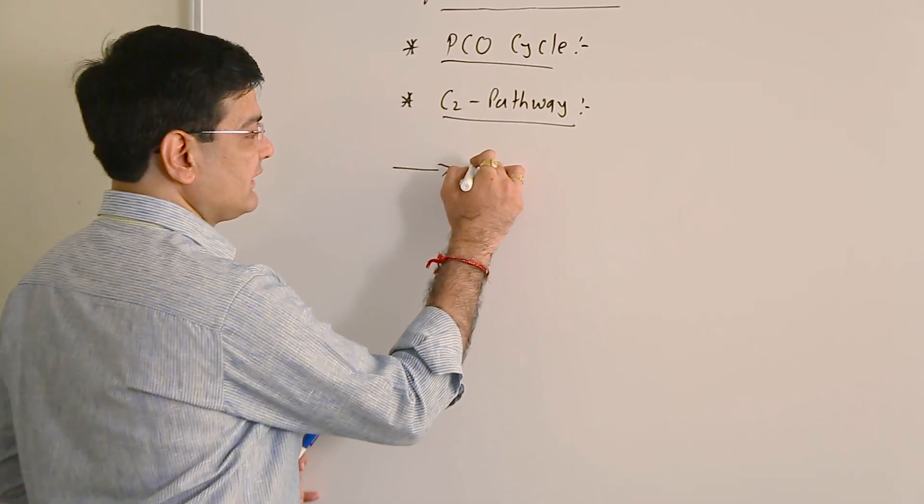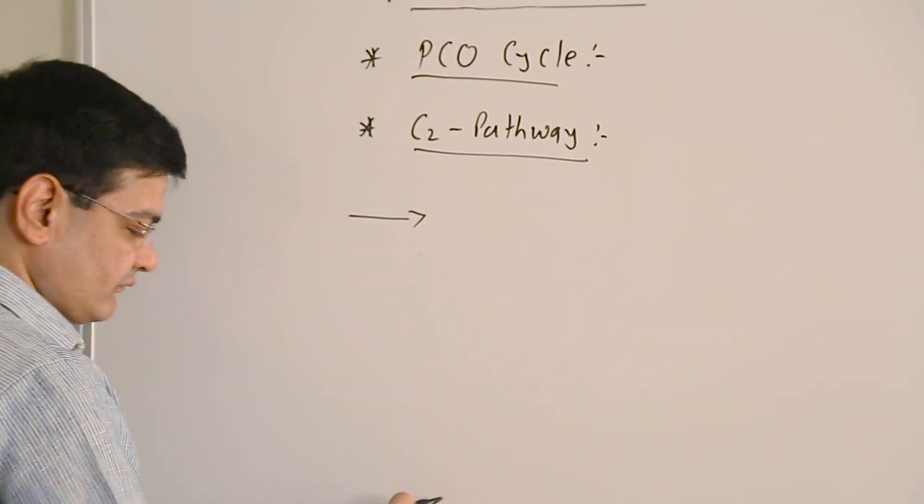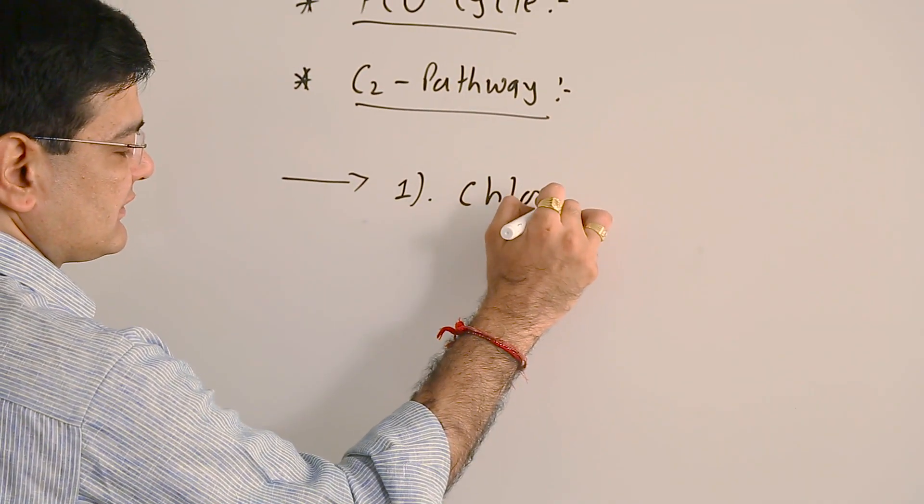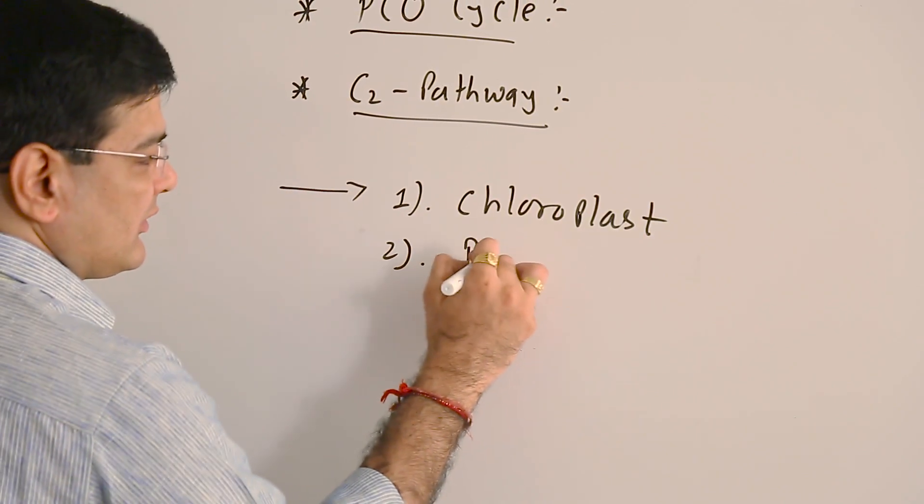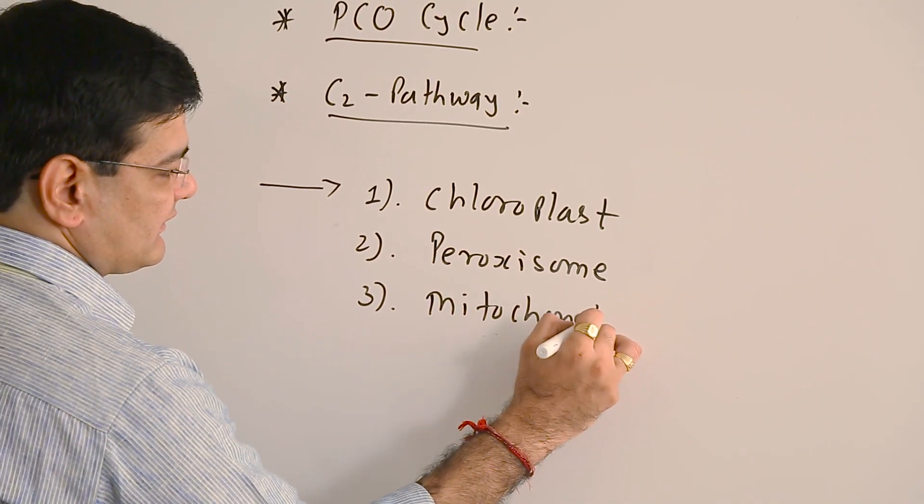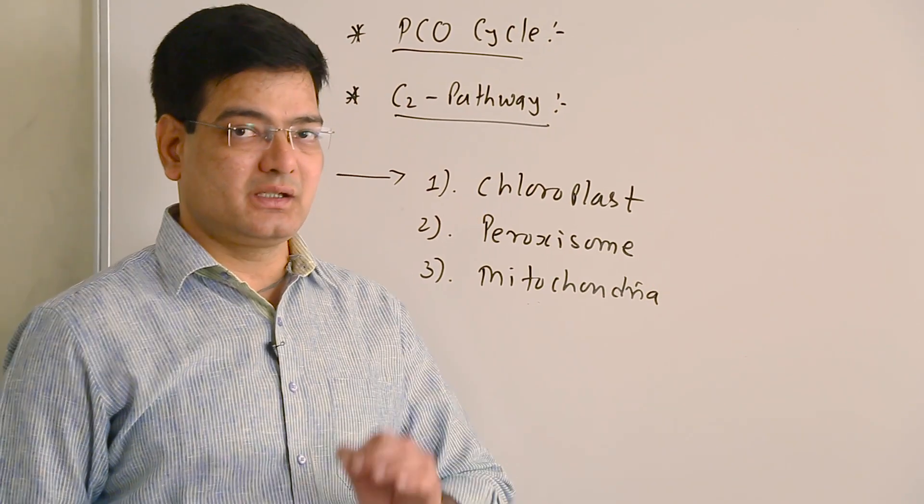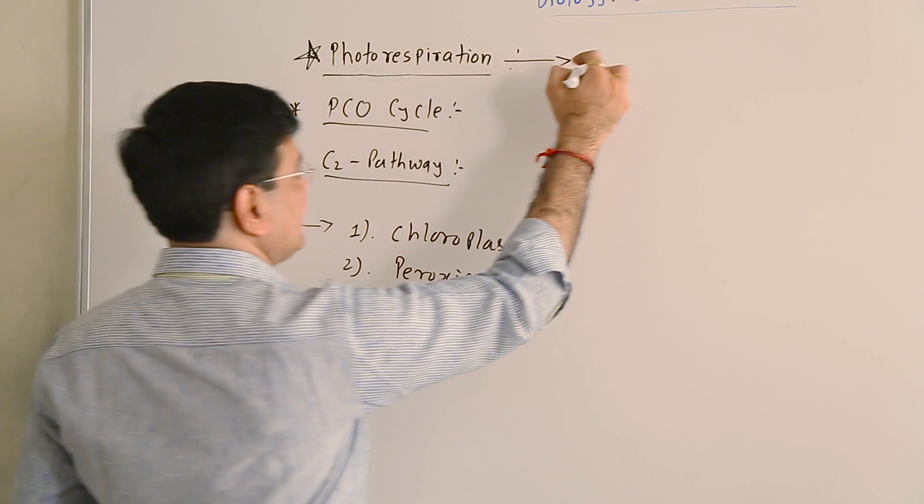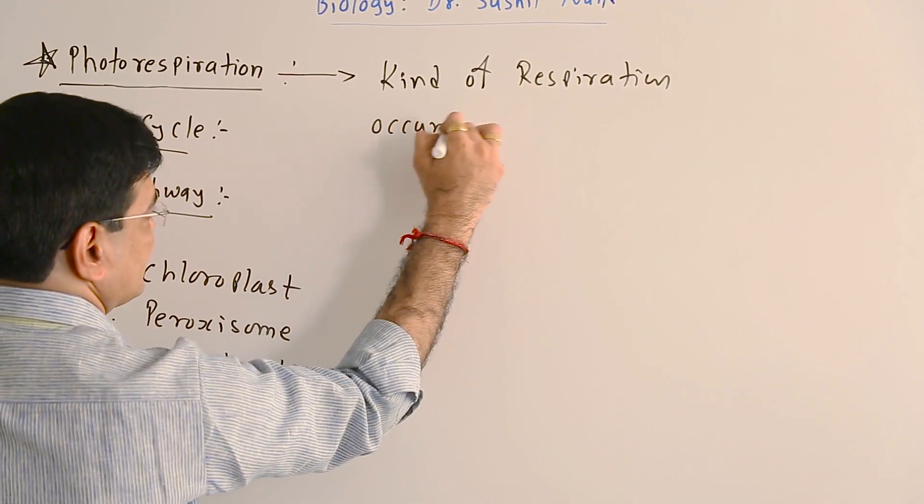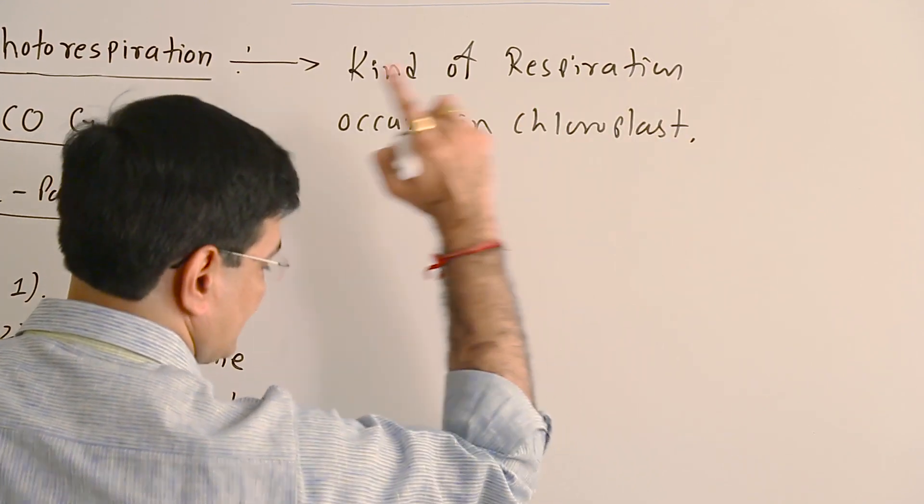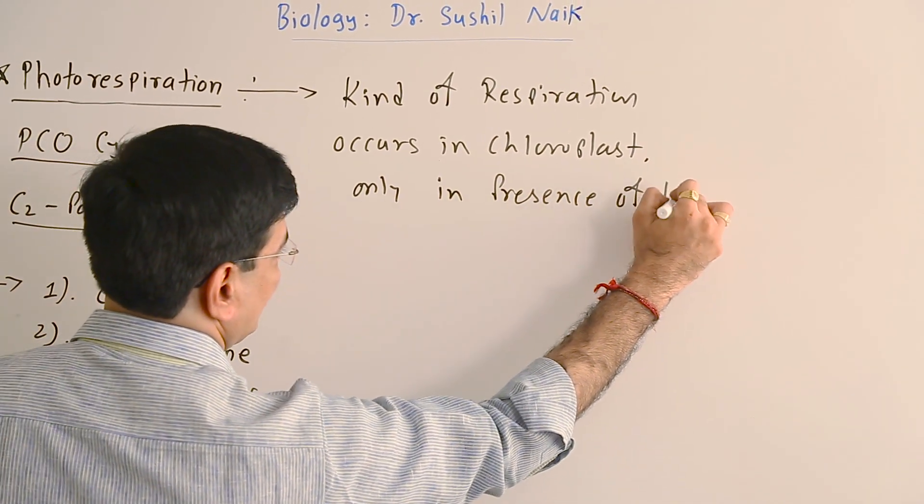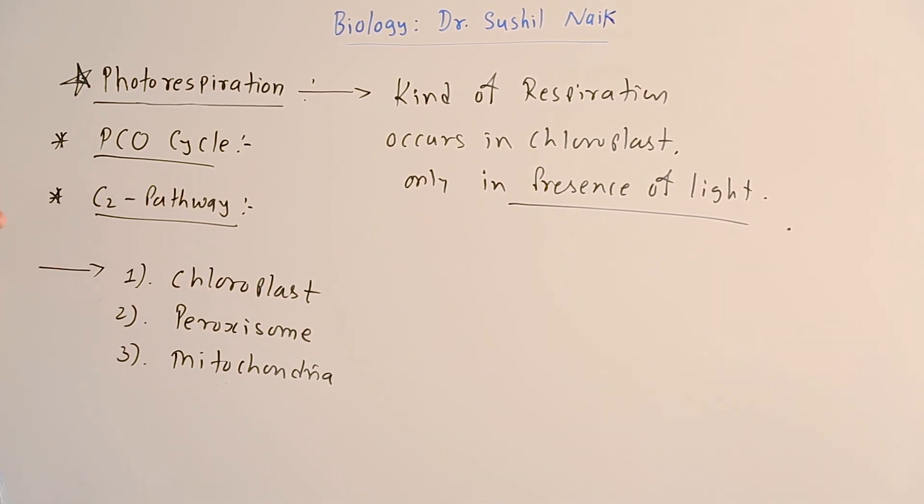Photorespiration is carried out in three different cell organelles, namely chloroplasts, peroxisome, and mitochondria, as this process occurs initially in the chloroplasts. The definition of photorespiration: it is a kind of respiration which occurs in chloroplasts initially and only in the presence of light.